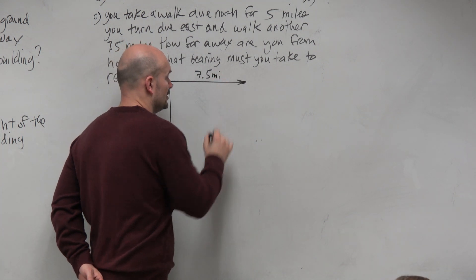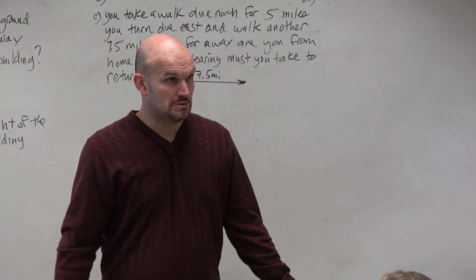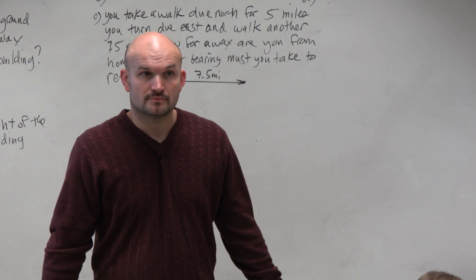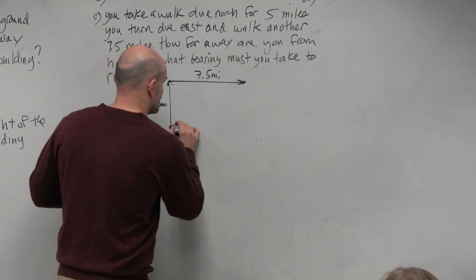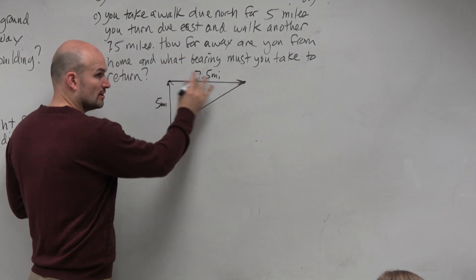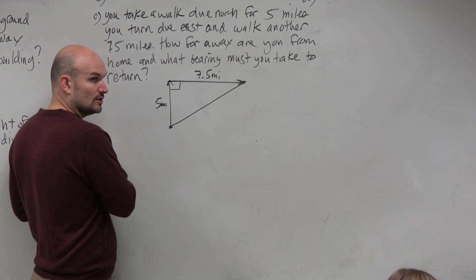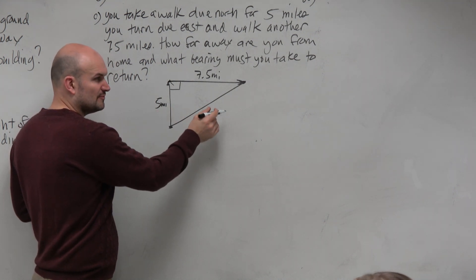Now, here you are and they say, how far are you away from home? So therefore, we've got to find this direct distance. Well, if you're going north and you go east, we can say that's a right angle. Do we have a way to be able to figure this out?